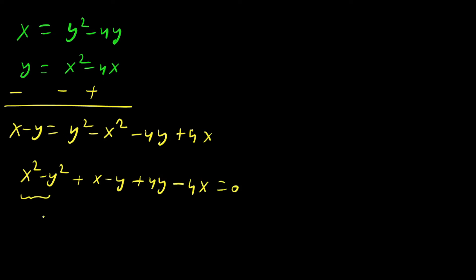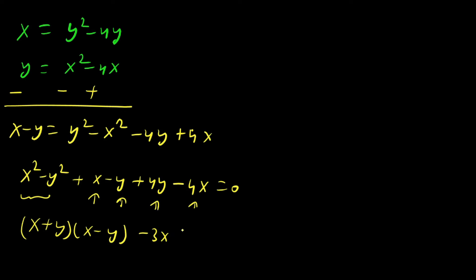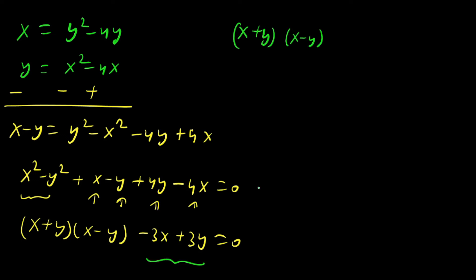Factoring x squared minus y squared as (x plus y)(x minus y), and combining like terms: minus 3x and plus 3y. Taking out minus 3 as common from those terms gives minus 3(x minus y). So we have (x minus y)(x plus y) plus minus 3(x minus y) equals 0, which factors as (x minus y)(x plus y minus 3) equals 0.